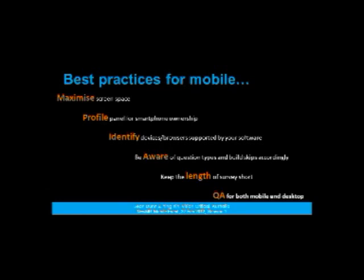At Vision Critical, we've come up with some best practices for mobile based on our own experience and research on research. One thing we recommend is being aware of screen space and maximizing it — don't have a big banner taking up half the screen on a mobile phone when you only have limited real estate. We also recommend profiling your panel for smartphone ownership so you can control your sampling and estimate how many people may complete a survey via mobile.